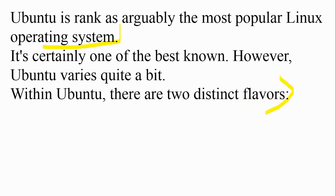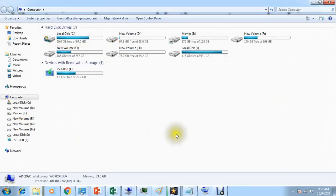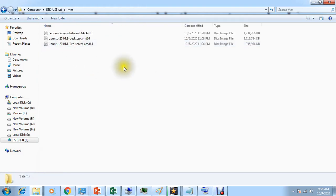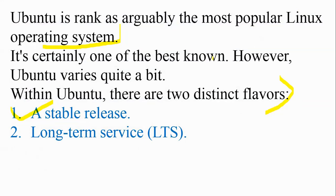However, Ubuntu varies quite a bit. Within Ubuntu there are two distinct flavors: one is a stable release and the second one is long-term service (LTS). When you download Ubuntu you will get two options. I have the long-term service version — Ubuntu 20.04.1 desktop — and I also have server, so we will be installing those one by one.